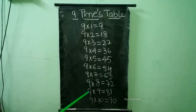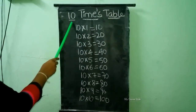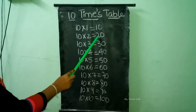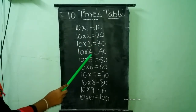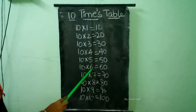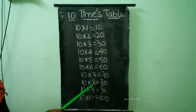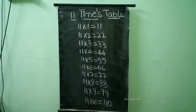9 times 9 is equal to 81. 9 times 10 is equal to 90. 10 times table. 10 times 1 is equal to 10. 10 times 2 is equal to 20. 10 times 3 is equal to 30. 10 times 4 is equal to 40. 10 times 5 is equal to 50. 10 times 6 is equal to 60. 10 times 7 is equal to 70. 10 times 8 is equal to 80. 10 times 9 is equal to 90. 10 times 10 is equal to 100.